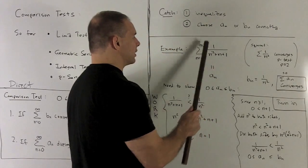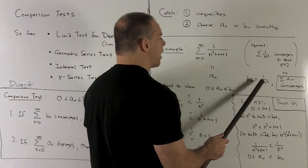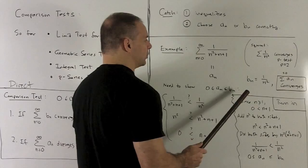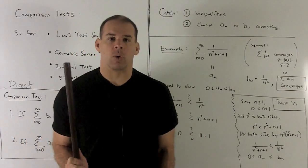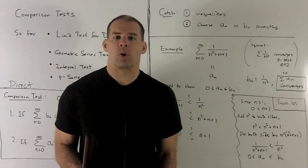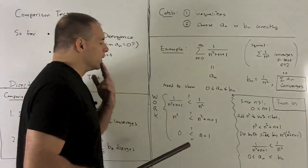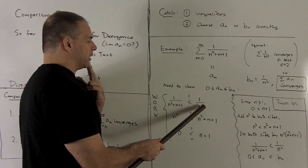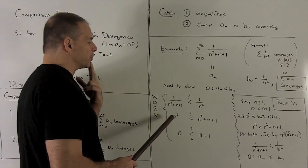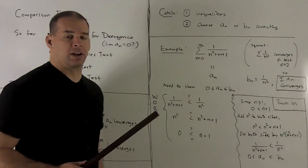Here, my a_n is going to be 1/(n²+n+1), and my b_n is going to be 1/n². So I have to show that 0 ≤ 1/(n²+n+1) ≤ 1/n². How do you deal with the inequalities? The rule is you start backwards with what you want to wind up with, then work your way to the front, and when you write it up, you do everything in reverse order. I want to show this inequality is true, so my next step is to clear the denominators by multiplying both sides by n² times (n²+n+1).